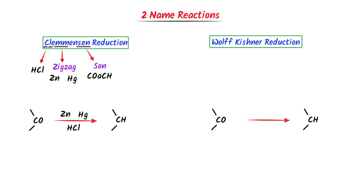For the Wolff-Kishner reduction reaction: K in 'Kishner' reminds me of potassium hydroxide. I write potassium hydroxide. Secondly, I select N and H — it reminds me of NH2-NH2 (hydrazine). So I write NH2-NH2. This is the complete Wolff-Kishner reduction reaction. Remember that in both Clemmensen and Wolff-Kishner reactions, we convert a ketone (C=O) to a methylene group (CH2).